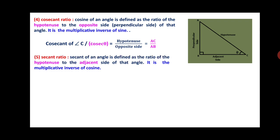Fifth: secant ratio. Secant of an angle is defined as the ratio of the hypotenuse to the adjacent side of that angle. It is the multiplicative inverse of cosine. Therefore, sec θ is equal to hypotenuse upon adjacent side, that is AC upon BC.